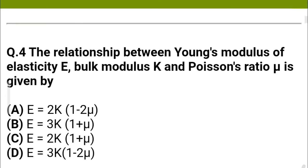Next question: The relationship between Young's modulus of elasticity E, bulk modulus K, and Poisson's ratio mu is given by — option A: E = 2K(1 − 2μ), option B: E = 3K(1 + μ), option C: E = 2K(1 + μ), option D: E = 3K(1 − 2μ).